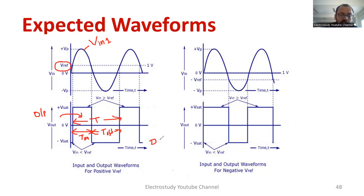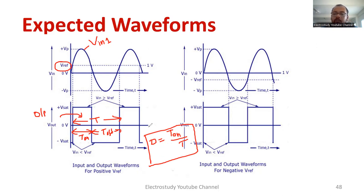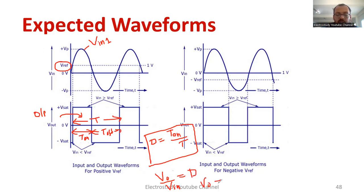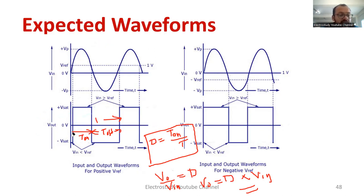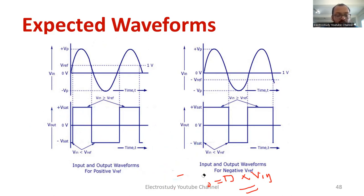The duty ratio or duty cycle is given by T_on divided by the total time period T. You can then measure the practical output voltage using a multimeter. Theoretically, the output voltage V_out equals the duty cycle multiplied by VIN. So calculate the duty cycle first, then multiply it by the input voltage to get the theoretical output voltage. Please observe the demonstration carefully — the same approach can be adopted whenever you are performing the practical in the laboratory.